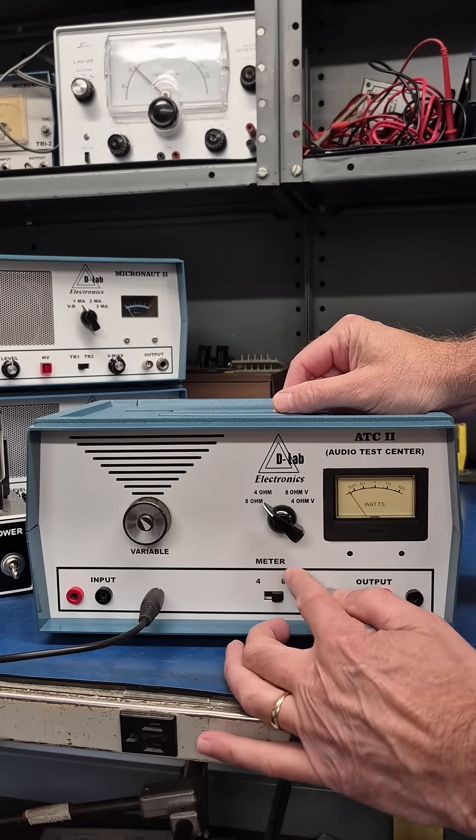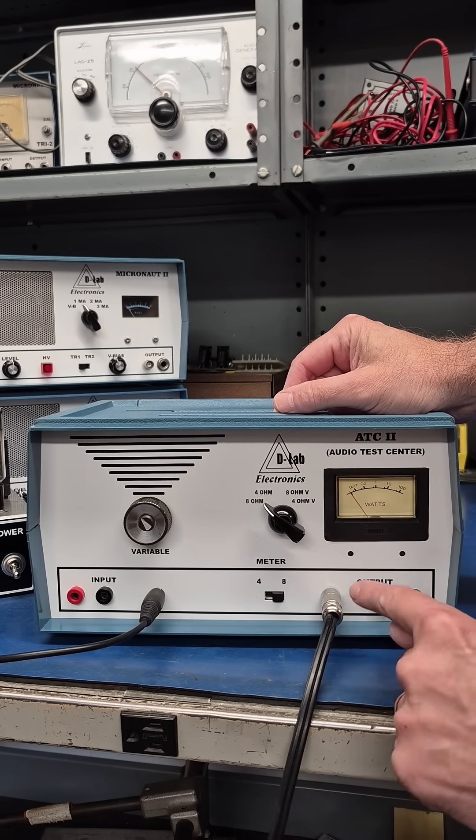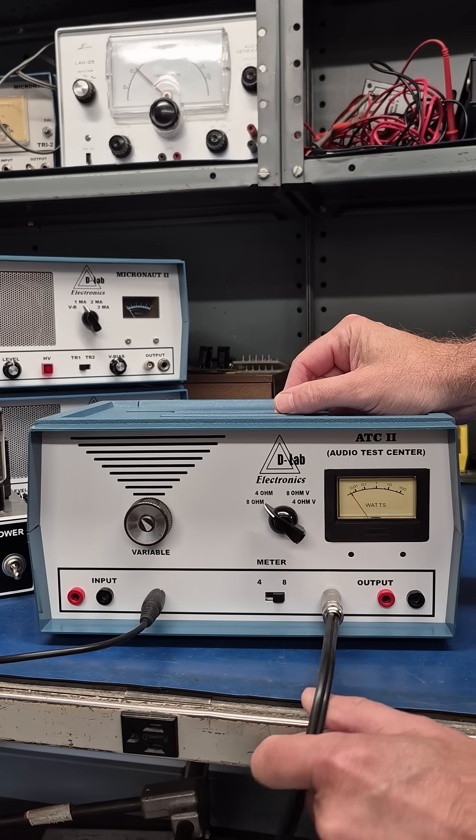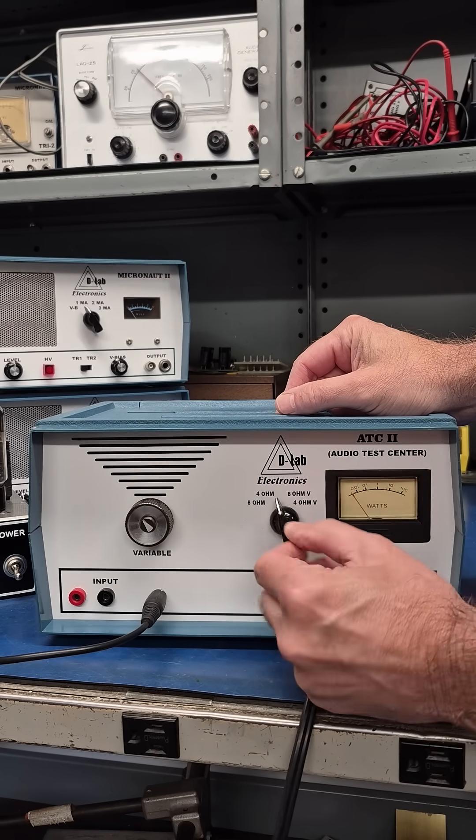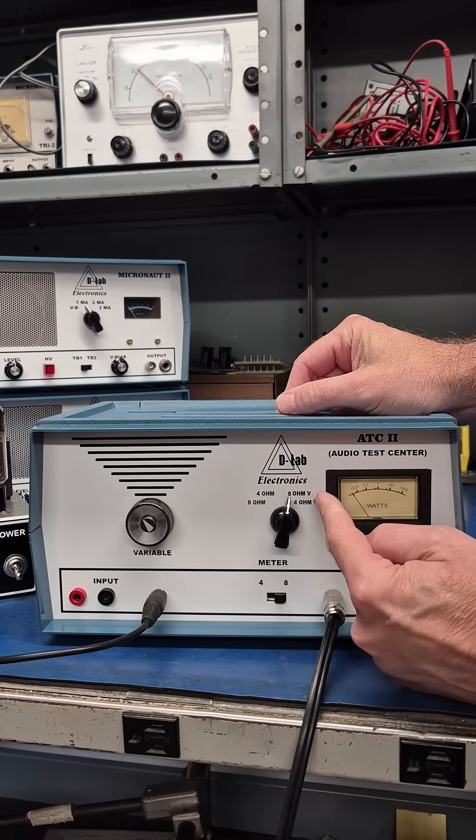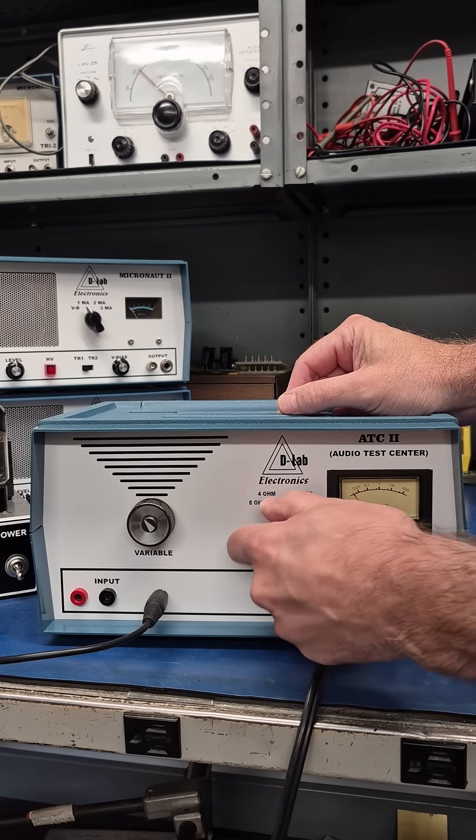This is your meter switch for 4 or 8 ohm operation and this is the output which would go to an external speaker. You have an 8 ohm dummy load, 4 ohm, and then you can have a variable 8 ohm and a variable 4 ohm.